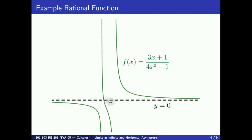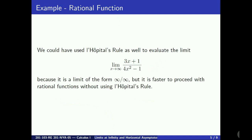Note that this function also has vertical asymptotes, but this is not something we would be able to find with the previous limits. This is something we would find by studying the domain of the function and its discontinuities. By the way, we could have used L'Hôpital's rule to evaluate the limit as x goes to infinity of 3x plus 1 over 4x squared minus 1, because it is a limit of the form infinity over infinity, but it is faster to proceed without L'Hôpital's rule when the function is rational.